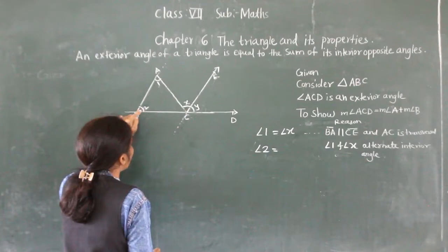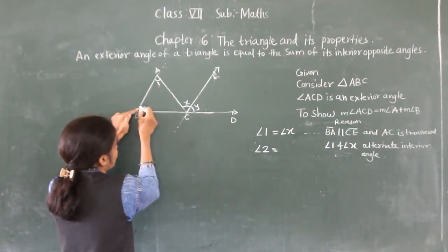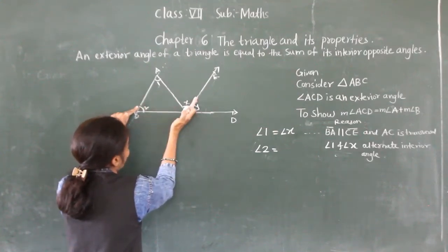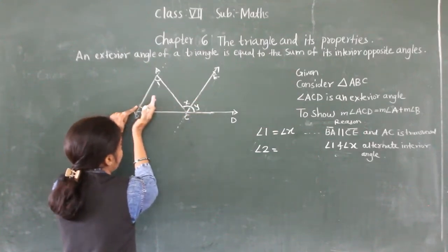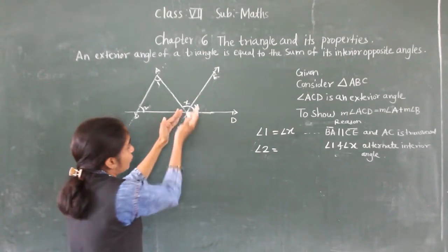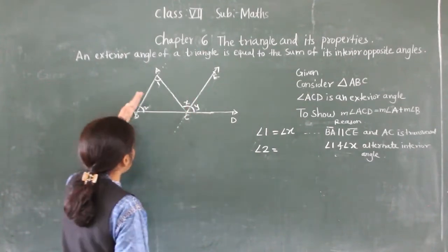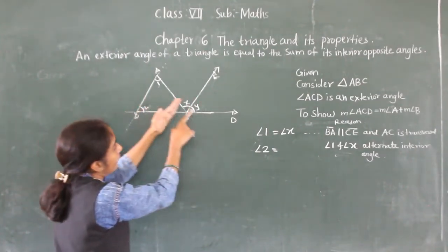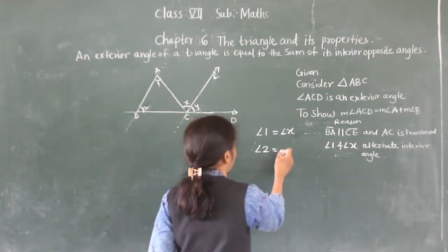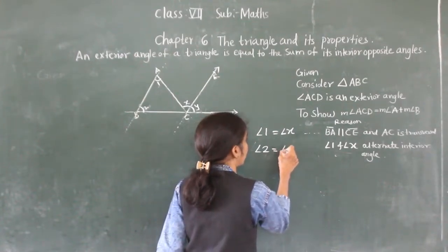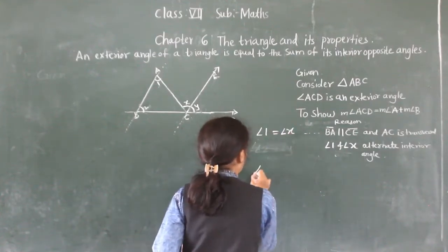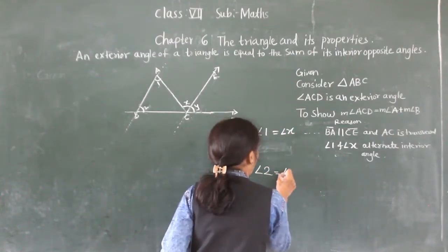See, this is the transversal. Angle 2 is on the right side of this line, and angle Y is also on the right side of this parallel line — same side, below these lines. So angle 2 and angle Y are equal because they are corresponding angles, and corresponding angles are equal.